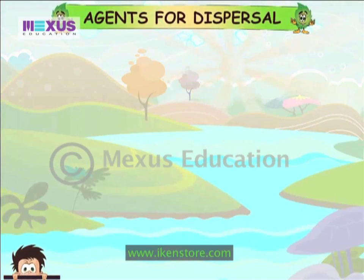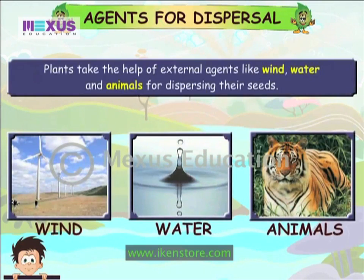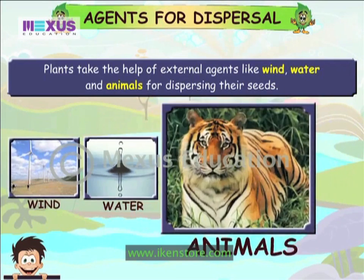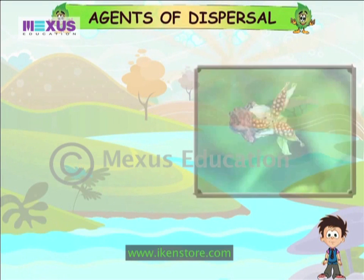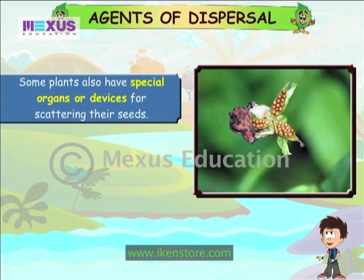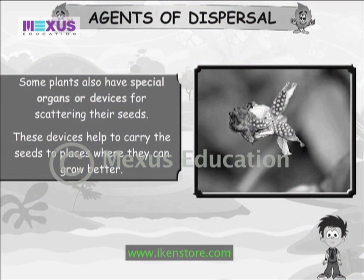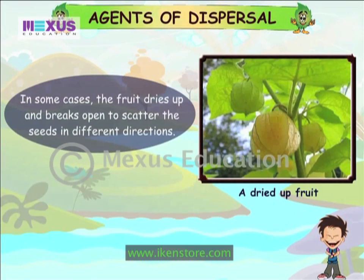Agents for dispersal. Plants take the help of external agents like wind, water and animals for dispersing their seeds. Some plants also have special organs or devices for scattering their seeds. These devices help to carry the seeds to places where they can grow better. In some cases, the fruit dries up and breaks open to scatter the seeds in different directions.